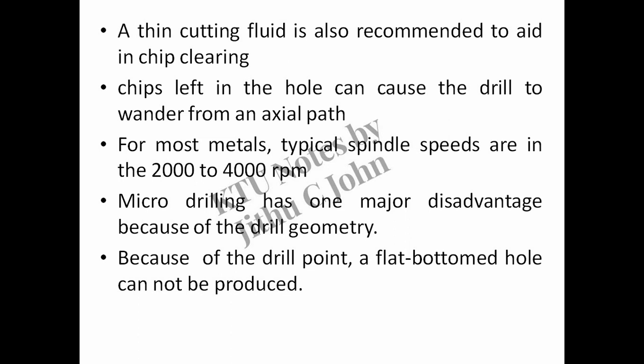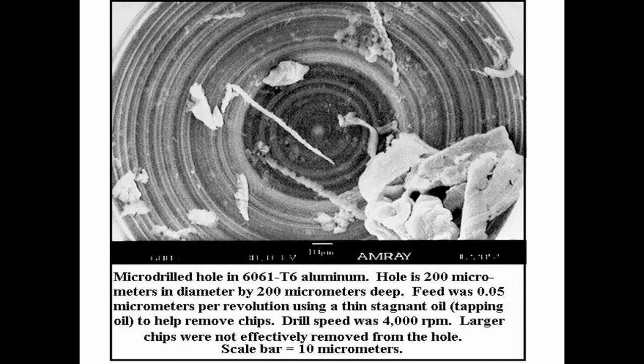For most metals, typical spindle speeds are in the 2000 to 4000 RPM range. Micro drilling has one major disadvantage because of the drill geometry: a flat-bottomed hole cannot be produced. The figure shows an SEM image of a micro-drilled hole in aluminium 6061 T6 alloy. The hole is 200 micrometers deep and 200 micrometers in diameter. The larger chips were not effectively removed from the hole.